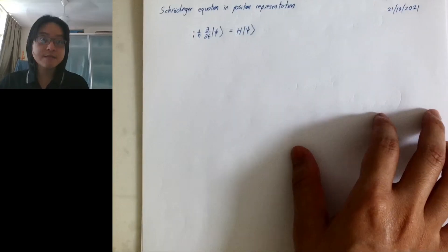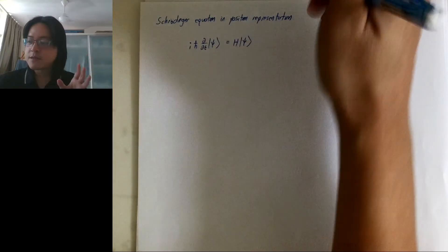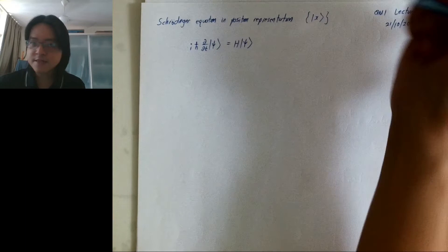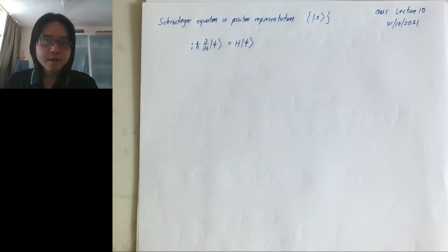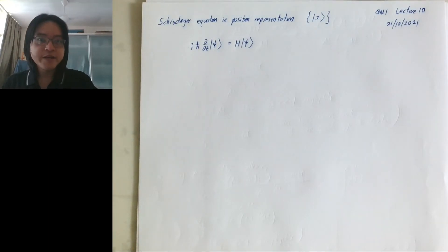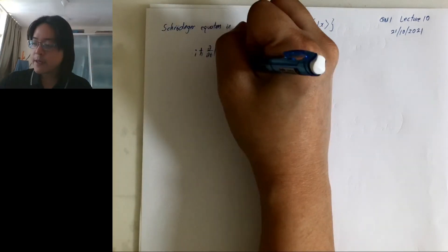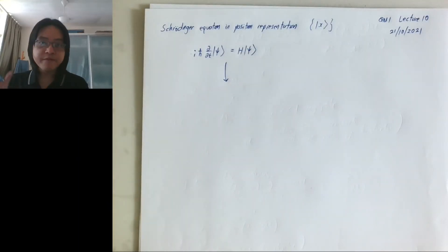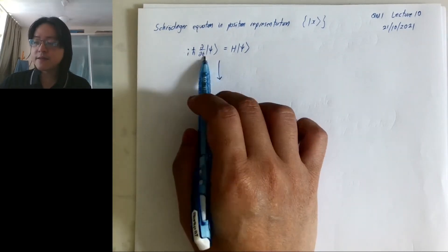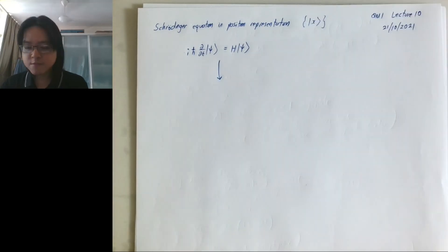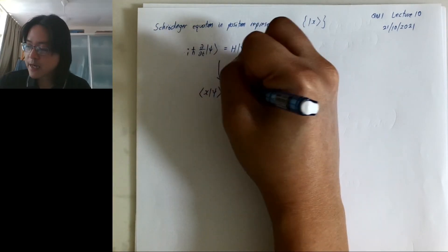We pick up where we left off. Previously we were talking about the position representation - representing everything in terms of the basis x. This is the original Schrödinger equation, which we've used to solve a couple of problems already. To derive it in a form you may have seen in modern physics, we take the position representation of the state, which becomes a function of x.